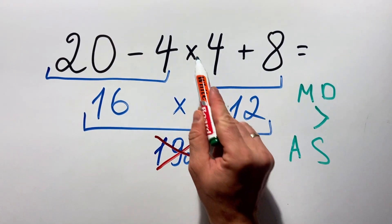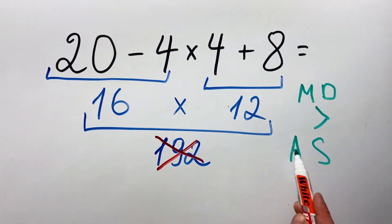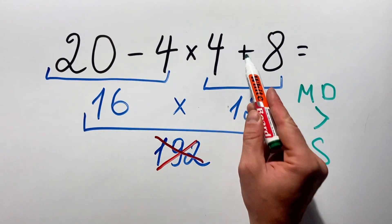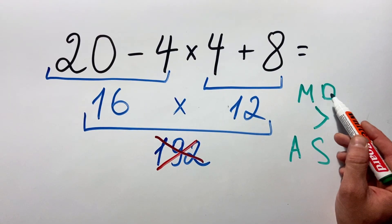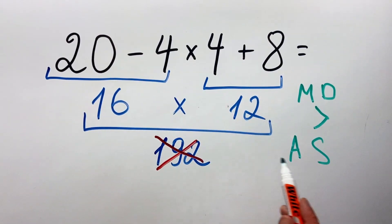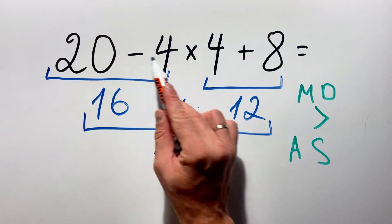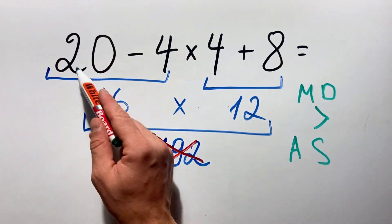In this case, we have one multiplication, one subtraction, and one addition. Meaning that first we must do the multiplication, and then we do the subtraction and addition.